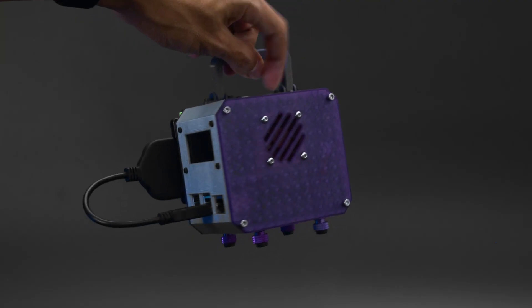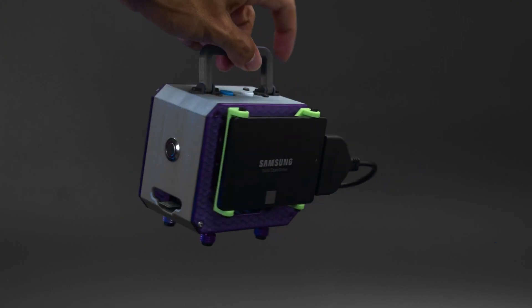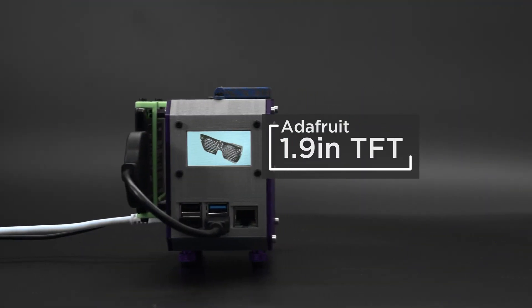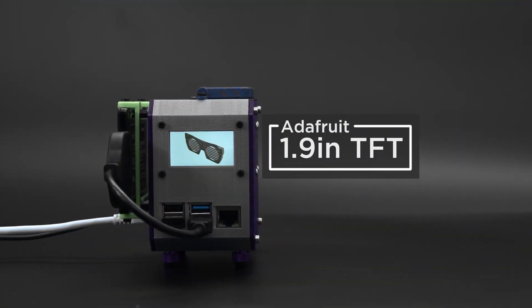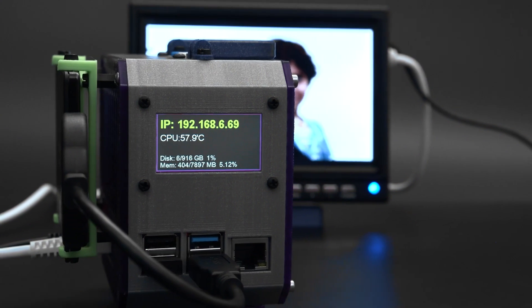However, the Ruiz brothers have added on all the extra bells and whistles. There's a 1.9-inch TFT display that can report on the Pi's status like temperature, memory, and storage capacity.